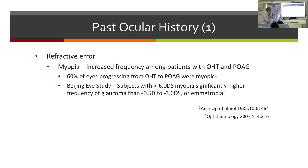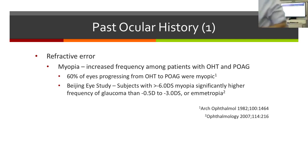Looking at refractive error: myopia has an increased frequency amongst patients with both ocular hypertension and primary open-angle glaucoma. In one study, about 60% of patients progressing from ocular hypertension to primary open-angle glaucoma were myopic. An epidemiological study from China showed that subjects with more than six diopters of myopia had a significantly higher frequency of developing glaucoma than those with lower degrees of myopia or hyperopia.